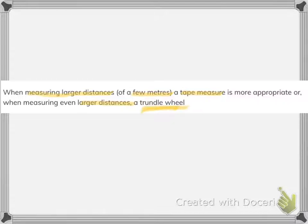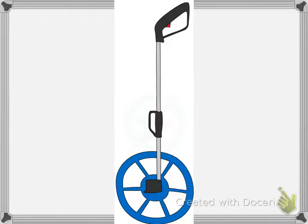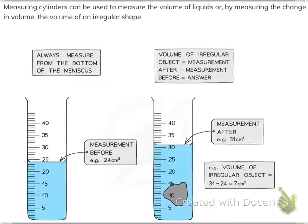This is a trundle wheel — I'll show you the picture of a trundle wheel. A measuring cylinder is used to measure the volume of liquids, or by measuring the change in volume, the volume of an irregular shape.